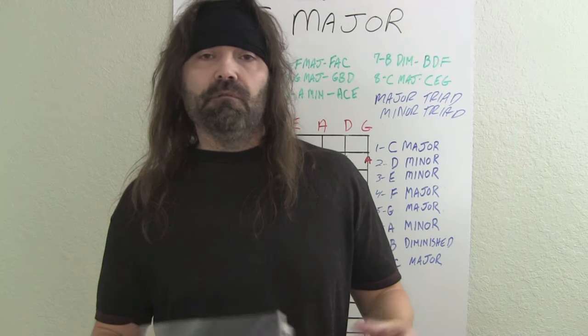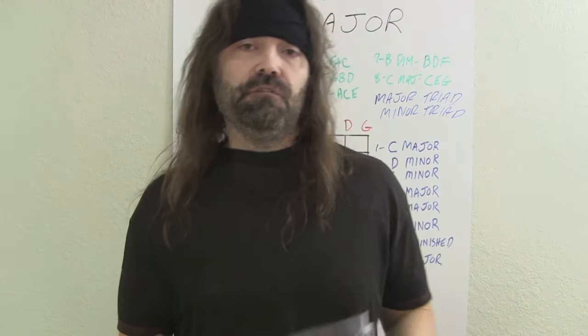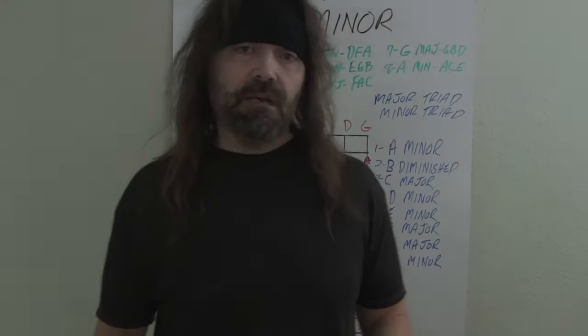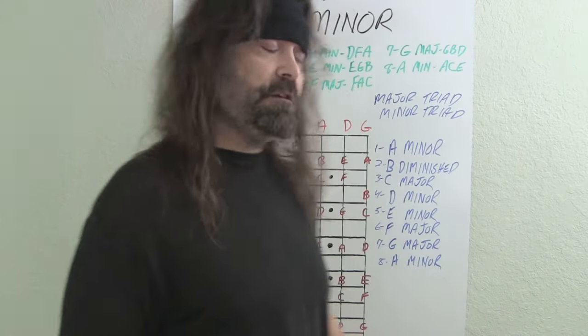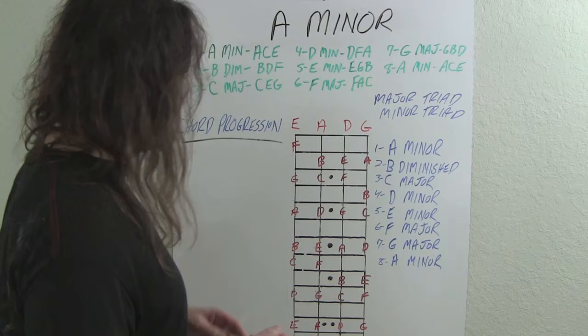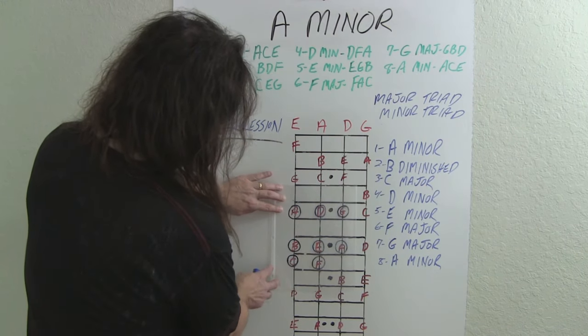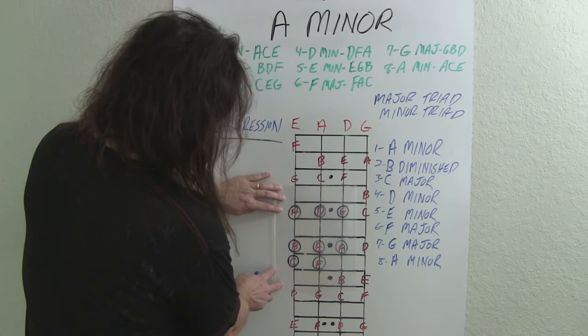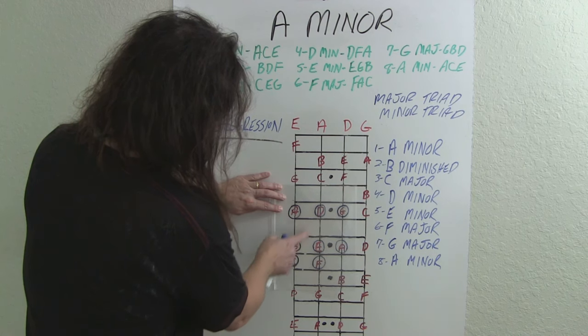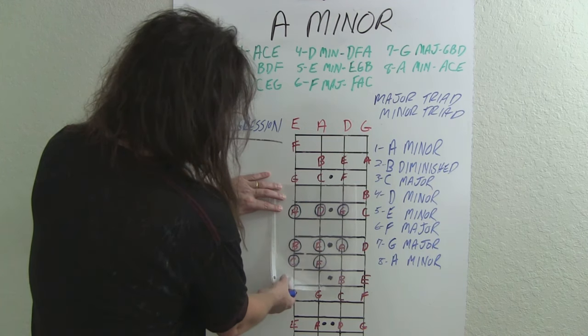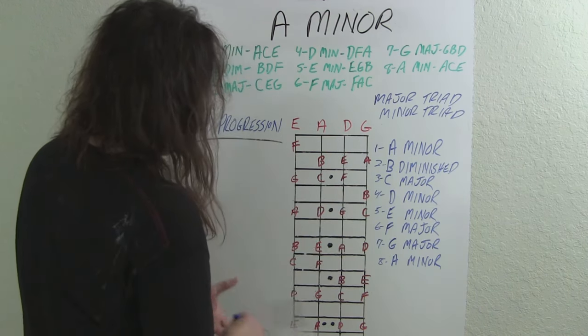So the relative minor to C major is A minor, and I'm going to teach you the A minor scale right now. We're going to go over the triads and the corresponding chords, and we're going to do some playing. Here's your finger pattern for the A minor scale.